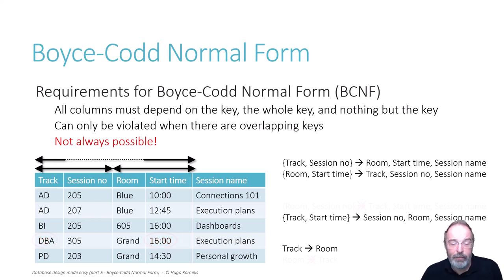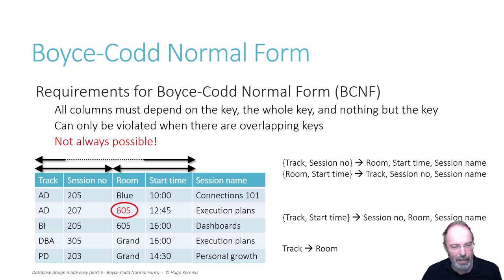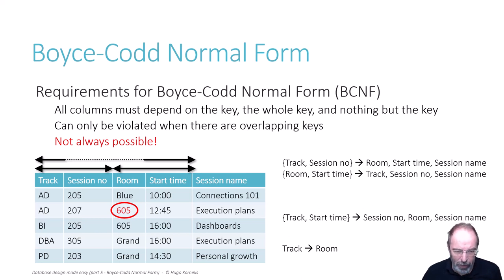So we now have fewer functional dependencies and fewer keys, but we still have a BCNF violation because room — a key column, so no problem for third normal form, but a column — is a problem for BCNF. Room is still determined by track, a subset of a key, which is not allowed. Is this a problem? Yes, this is a problem. Because what if I change the population and reassign session AD 207 to room 605? The database will allow this; none of the constraints is violated. But the dependency that track determines room — that is violated. We violate the business rule and the database does not prevent us.